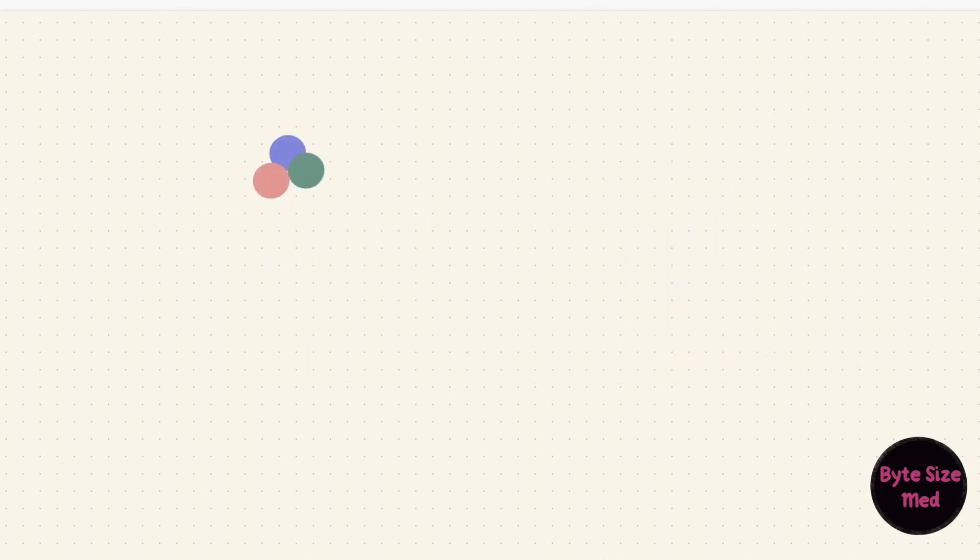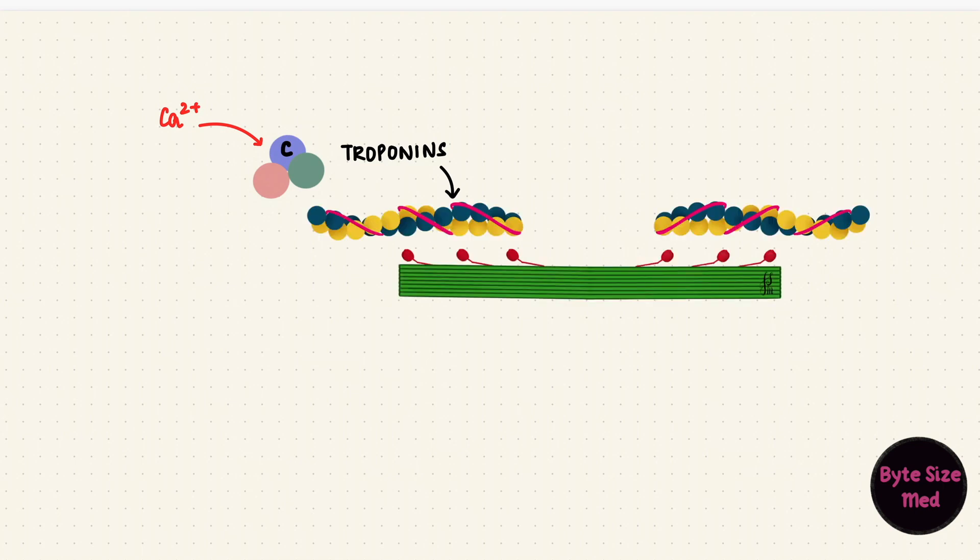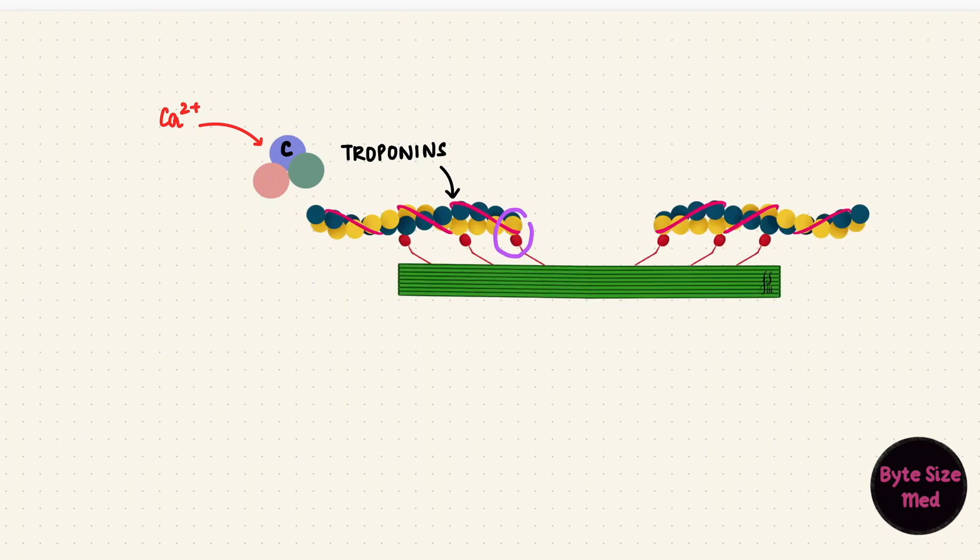The calcium then binds to troponin C, which is part of the thin filament. This moves tropomyosin out of the way, allowing myosin to bind to actin. Myosin has ATPase activity.